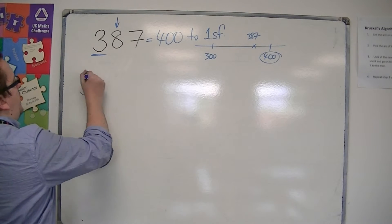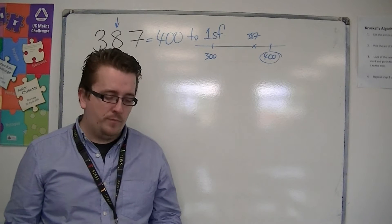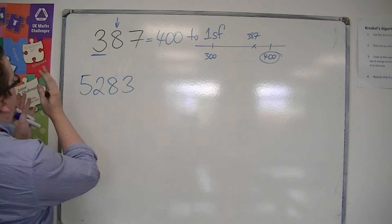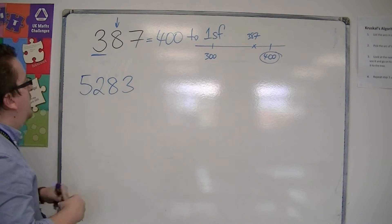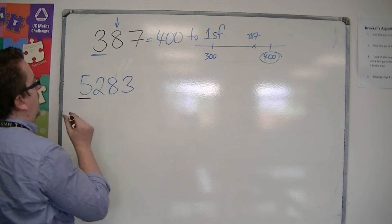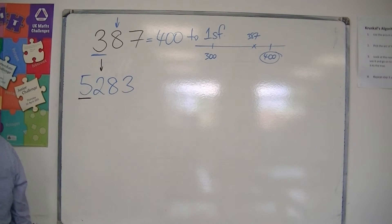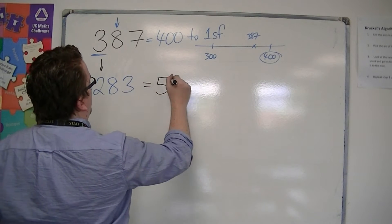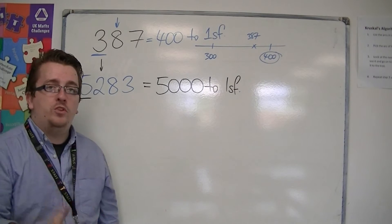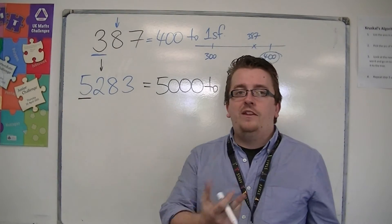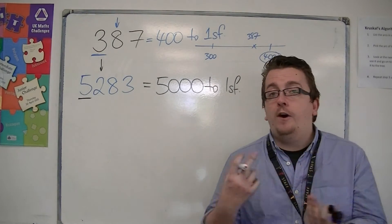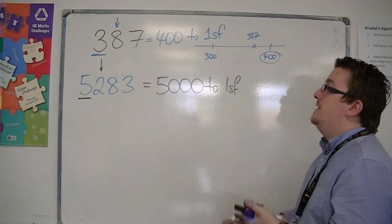So let's have a look at 5,283. Working from left to right, ignoring anything that is zero, you hit that five — so that is the most significant digit, the one significant figure column. I look one to the right; the two tells me to round down. So this would be 5,000 to one significant figure. It's like saying: the 5,000 pound is the most important part — is it close to 5,000 pounds or 6,000 pounds? In this case, it's 5,000 pounds.